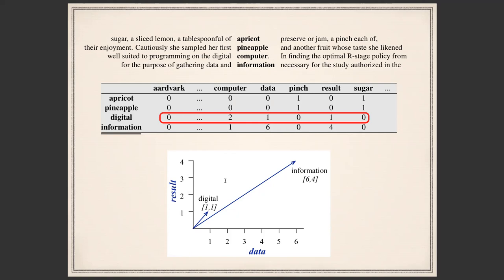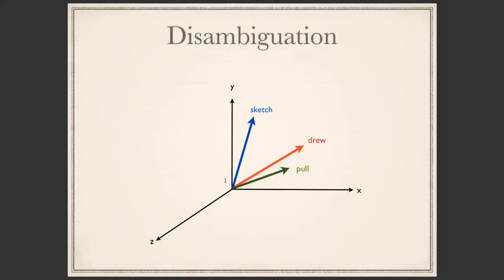One major task this was used for was word sense disambiguation. If you have the word 'draw,' it has many meanings — drawing a card as in pulling, or drawing with a pencil as in sketching. If you build a vector for 'draw' based on the corpus, you can disambiguate its meaning: if it's closer to 'pull,' you know it's the pulling meaning of draw; if it's closer to 'sketch,' you know it's the sketching meaning.